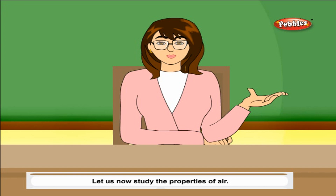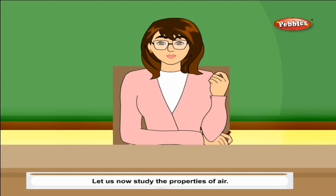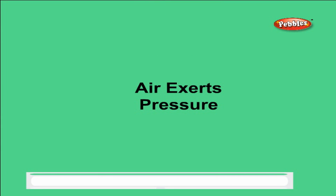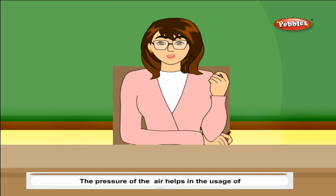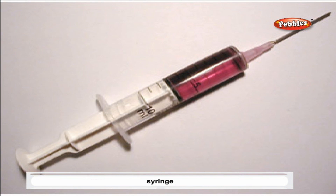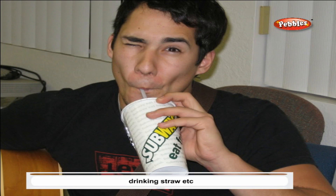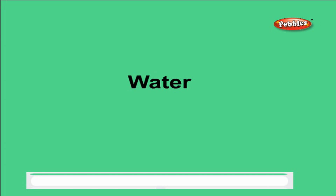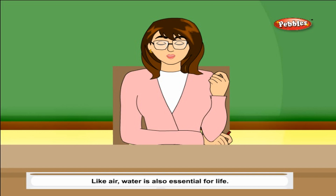Let us now study the properties of air. Air has weight and occupies space — we can find this with the help of a balloon. Air also exerts pressure, and this pressure helps in the usage of syringes, droppers, drinking straws, and so on.